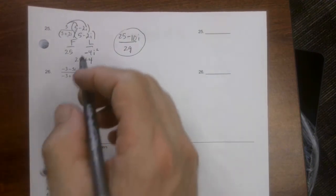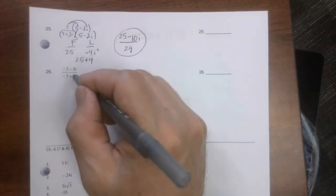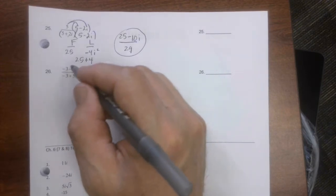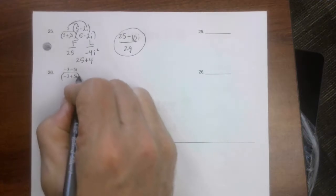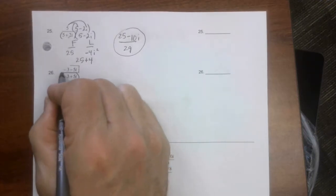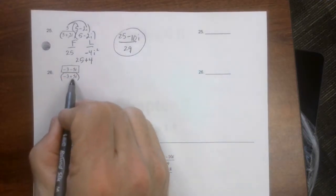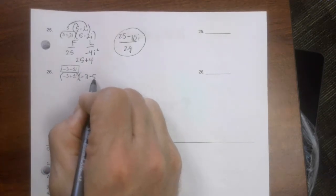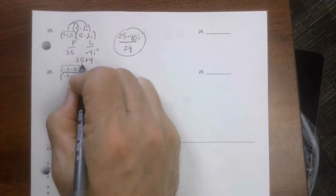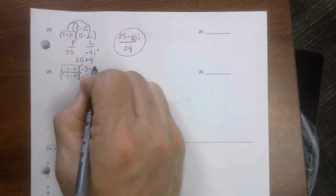And then the last one. This is baiting you into starting to cancel these 5s and these 3s. Don't do it. We talked about that in class. All you got to do is ignore the top, concentrate on the bottom, and decide that its conjugate is that. But then I need to do the same thing to the top.